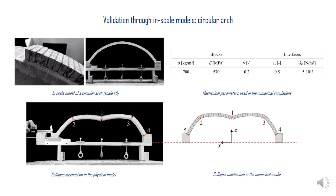The numerical 5-hinge collapse mechanism consists in the simultaneous opening of two hinges at the abutments, whereas in the experimental test only four hinges open at collapse, probably due to geometrical imperfections of the physical model.